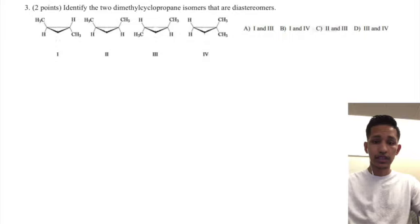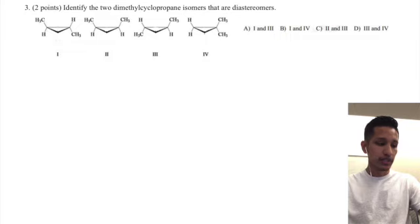So what you need to know is what is a diastereomer. A diastereomer are two isomers that are not mirror images of one another. When two isomers are mirror images of another, that's when they are enantiomers.